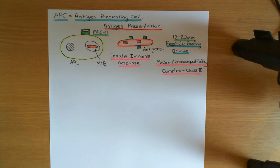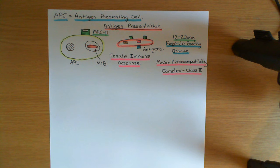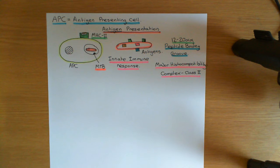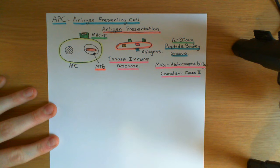The T cells that the antigen presenting cell is going to activate are going to be targeted against a specific peptide fragment of a specific antigen of a pathogen. The antigen presenting cell has successfully phagocytosed the mycobacterium tuberculosis cell and has put fragments of the antigens on its surface in the peptide binding grooves of MHC class II protein complexes. Now it's going to go to activate T cells.